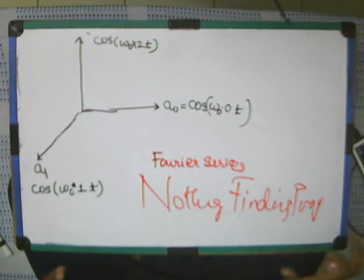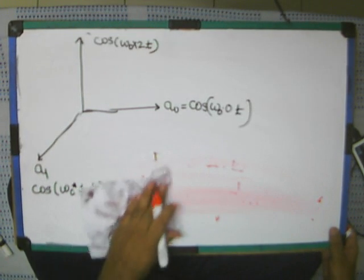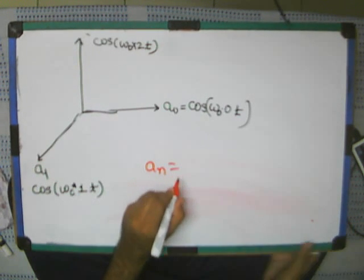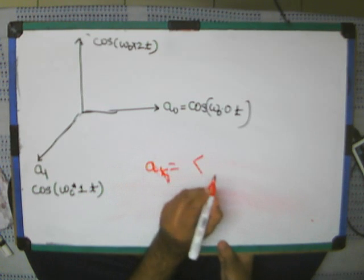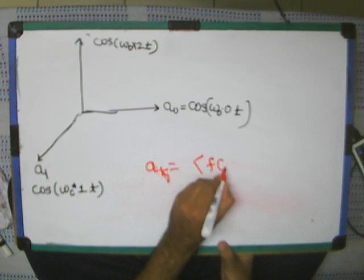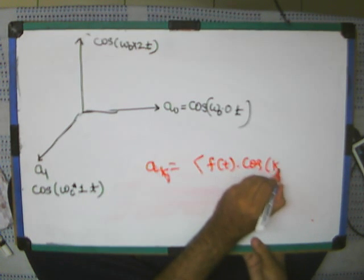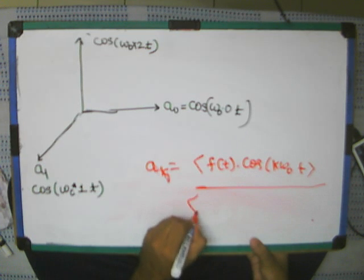This is nothing but finding projections because each of these coefficients a_n or a_k is found by taking the dot product of the function f(t) with cos(k ω₀ t) divided by cos(k ω₀ t).